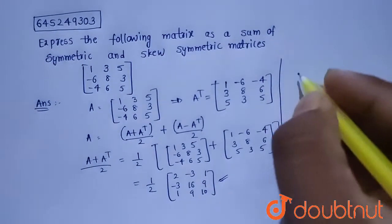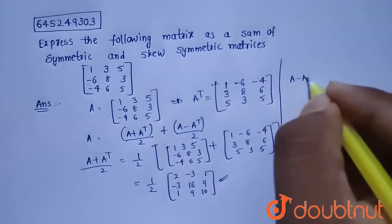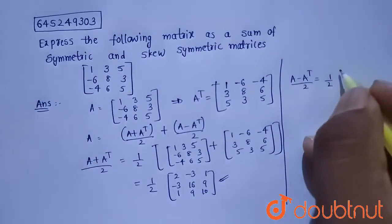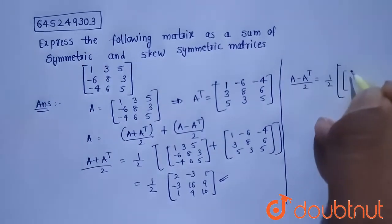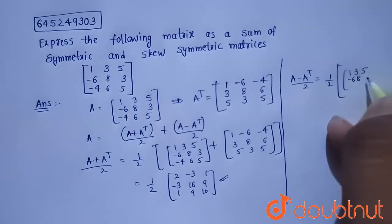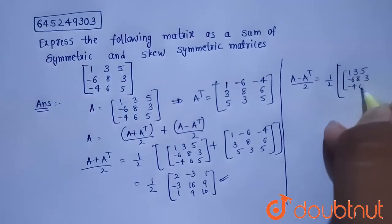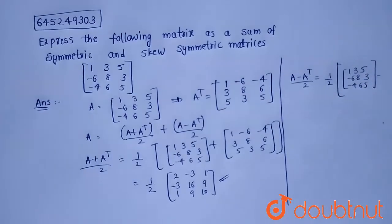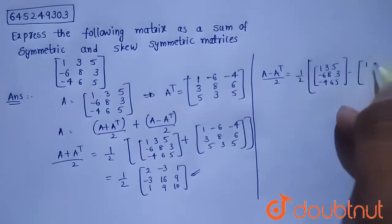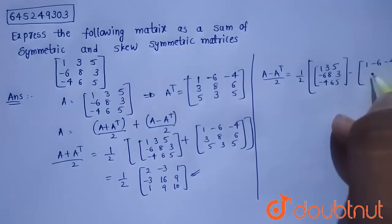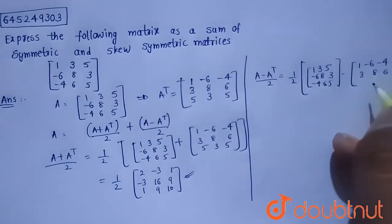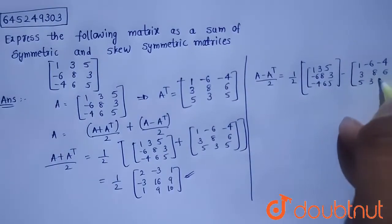Now let us find the skew-symmetric matrix, which is (A - A^T)/2. That will equal (1/2) of [1, 3, 5; -6, 8, 3; -4, 6, 5] minus [1, -6, -4; 3, 8, 6; 5, 3, 5].